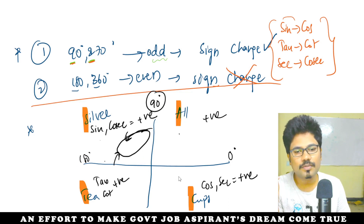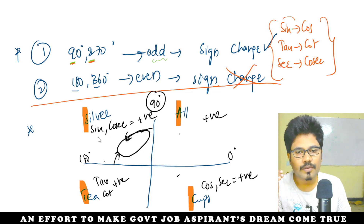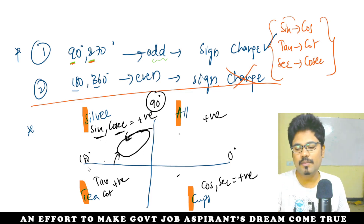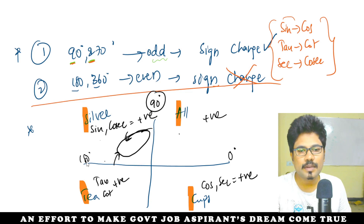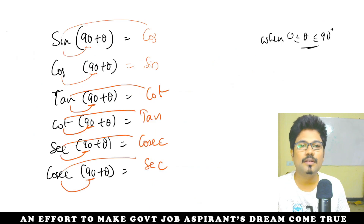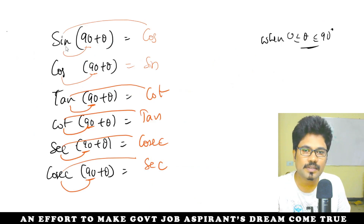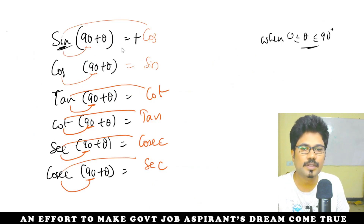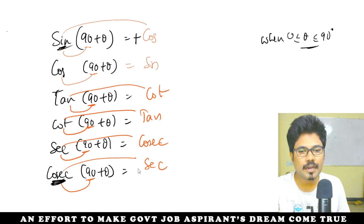First, second, third, fourth quadrants. In this second quadrant, sin is positive. So we find sin is positive in the second quadrant. The result will carry a positive sign if the resulting function (after sign change) is positive in that quadrant.